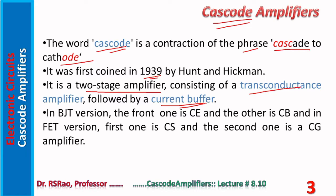A current buffer is one whose current gain is one or nearly one. CB is a current buffer. In the BJT version, the front stage is CE and the other is CB. In the FET version, the first stage is CS and the second one is CG.